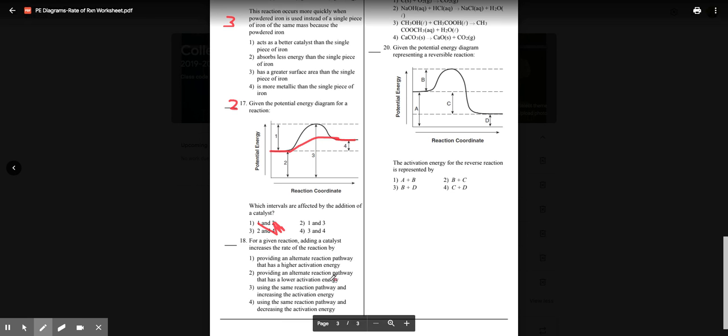For a given reaction, adding a catalyst provides an alternate reaction pathway, a different path. And this was our activation energy, and now it's just like this, so it's a lower activation energy. Choice two.